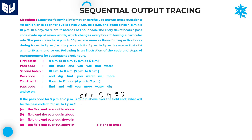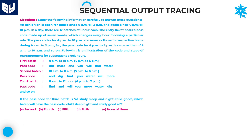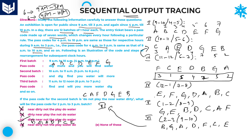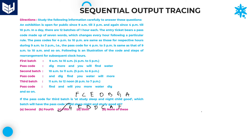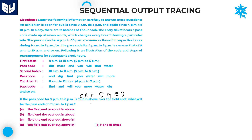1 to 2 PM is batch number 5. Batch number 5 is G, E, B, D, C, A, F. That should be your answer.